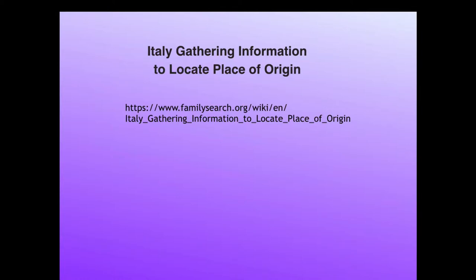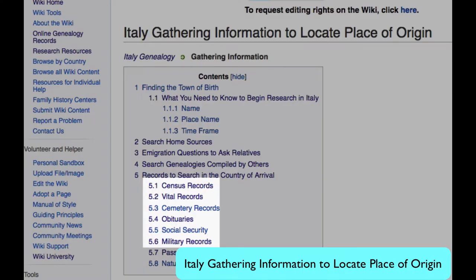This article listed in the notes below this video is a checklist of all the types of records that you can use that will help you make that link back to Italy. For this video, we will be covering these records mentioned in parts 5.1 through 5.6. For each of these record groups, I will show you an example and point out how it gives the place of origin in Italy. Then we will return to this article — I will refer to it as the Italy Origins article — and I will show you the links for finding those records for yourself.